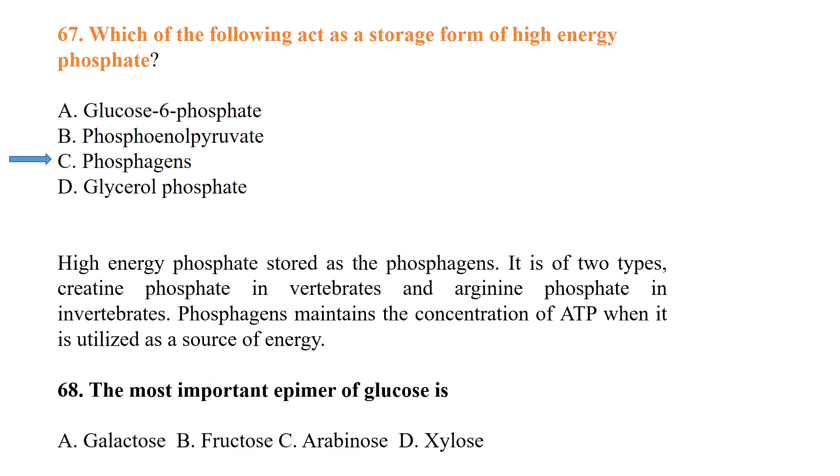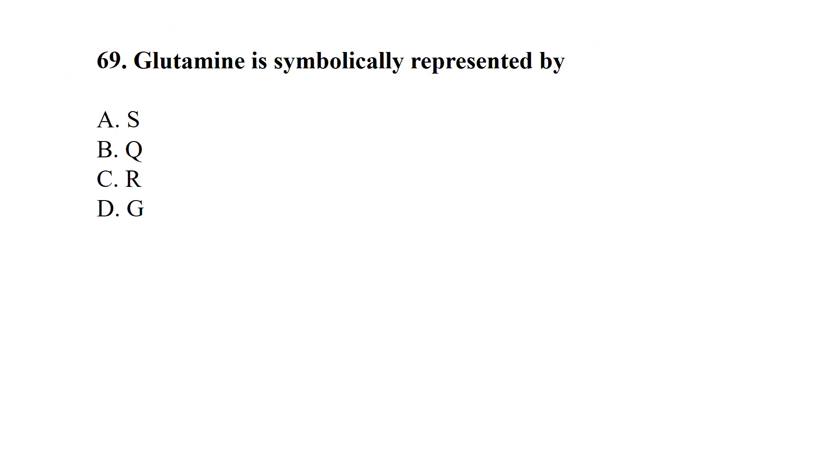The most important epimer of glucose is galactose. Glutamine is symbolically represented by the symbol Q. A lipid bilayer is permeable to - among these options, urea is the best answer.